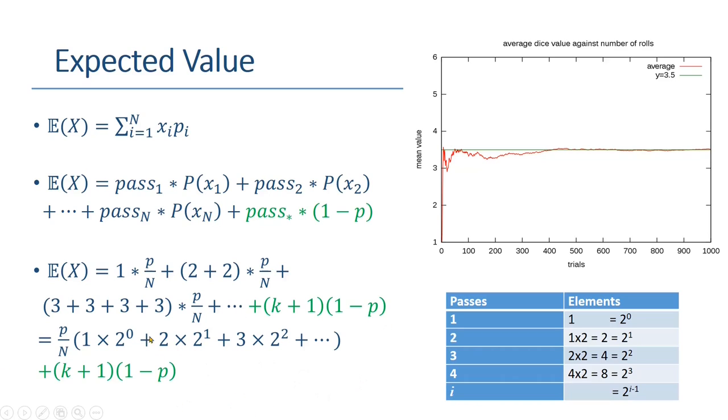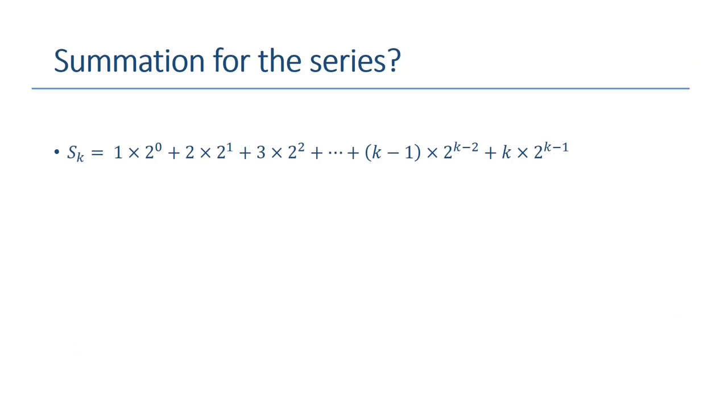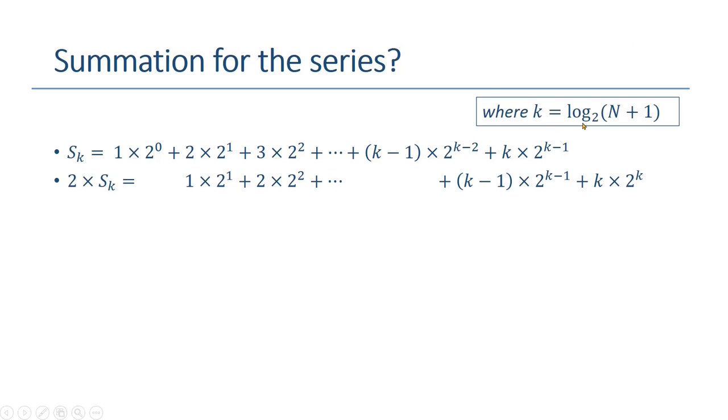Which is unfortunately not very easy to solve. We have to find a way to solve this one first. That expression can be written as S_k. To solve this, we have to multiply by two on both sides. This will give us this expression. If I multiply it by two, it will give me two raised power one. This one would become two raised power two, and so on. Here k is the maximum pass, which is log n plus one base two, which we have derived in part one of this video.